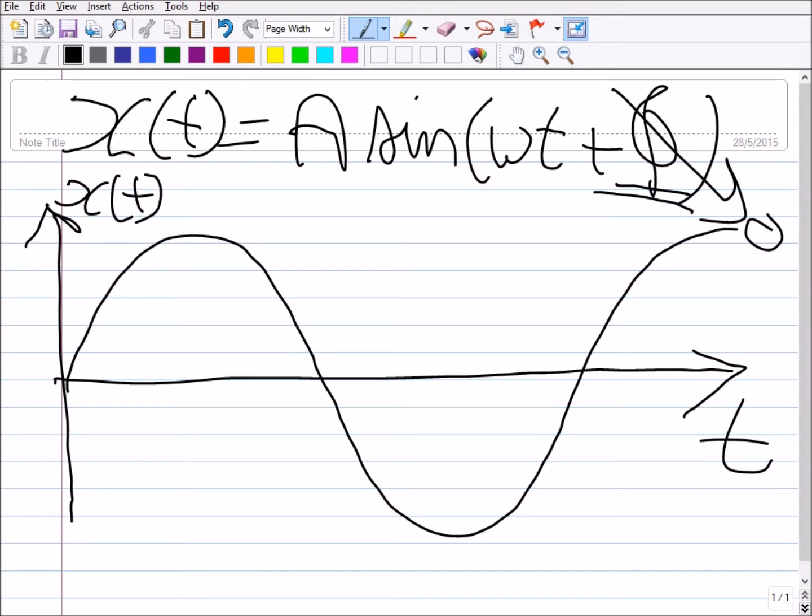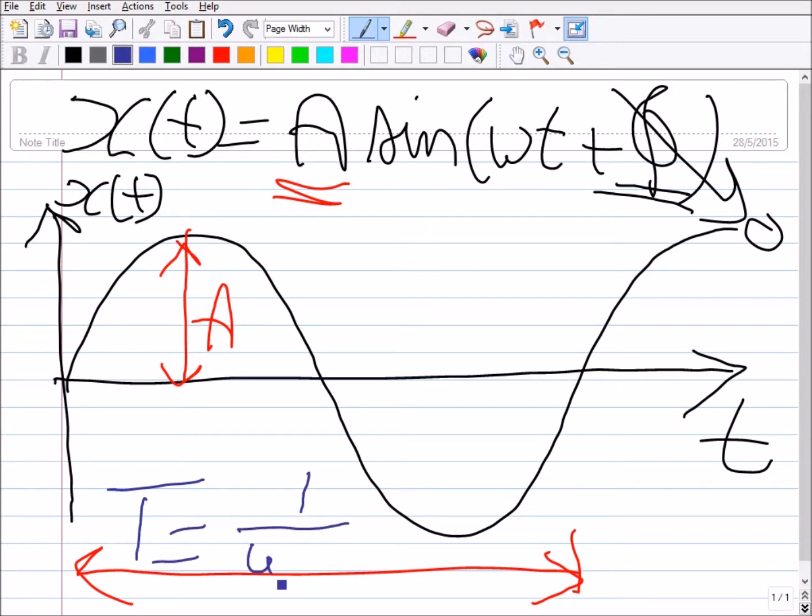So you end up with x(t) equals this term. Now the first thing that we need to note is that we have the amplitude - this is what we call the amplitude of vibration A. Also the period of vibration, which is the time the system takes to complete the full cycle here, T, this is equal to 1 over ωₙ.